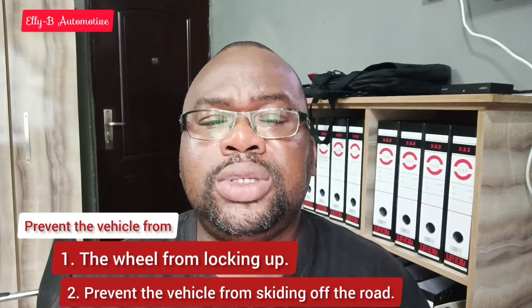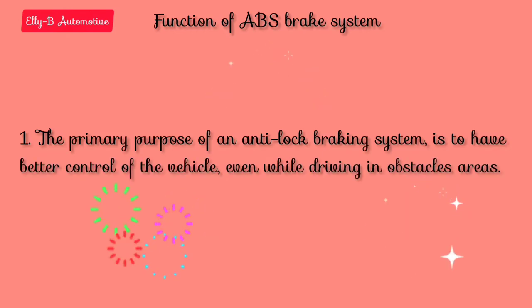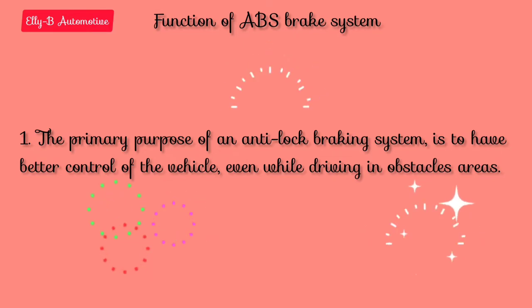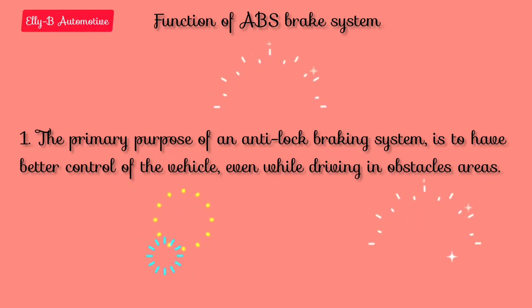Maybe the brake was applied while at a banked corner, or there is an obstruction somewhere and you suddenly hit the brake. This system attempts to assist the driver in bringing the vehicle to a complete stop while the driver maintains control. The primary purpose of an anti-lock braking system is to have better control of the vehicle even while driving in obstacle areas.